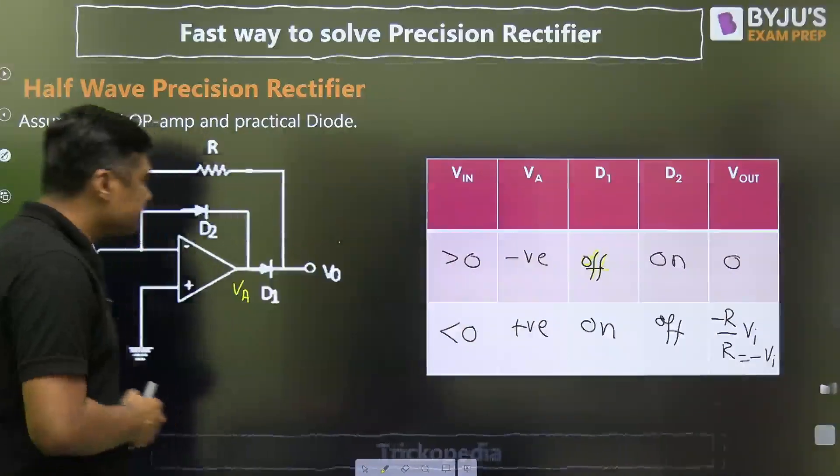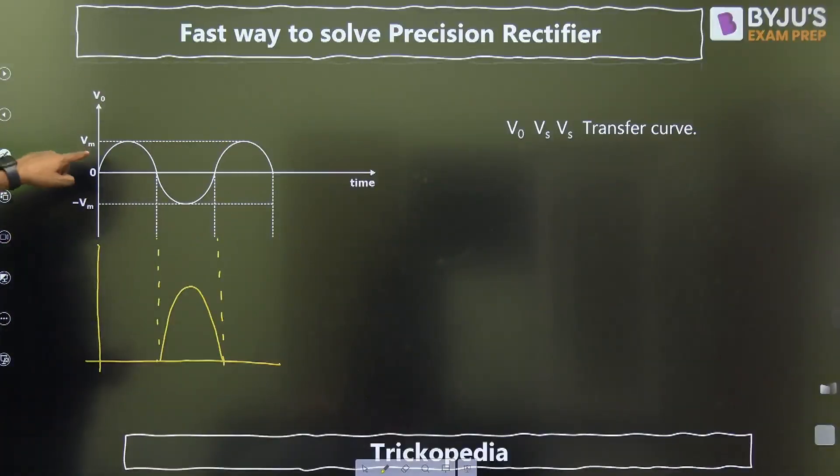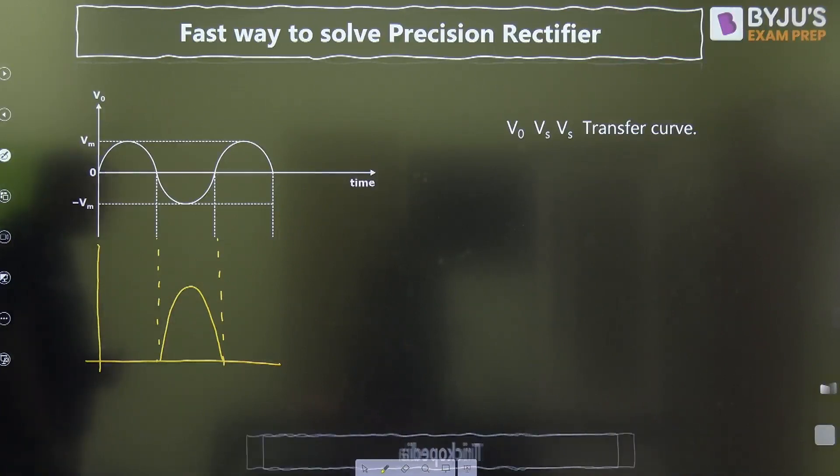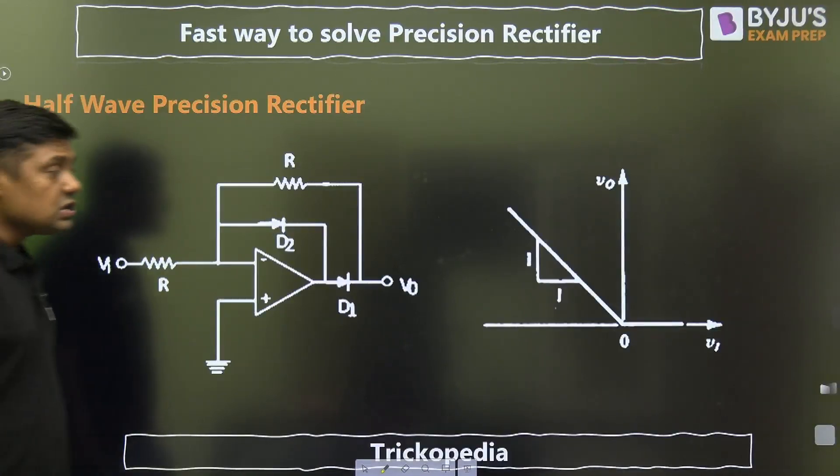Now, watch this diagram. This is the input. For positive half, output is 0. For negative half, we are getting the positive output. Again, for positive half, output is 0. This is a half-wave. What is the transfer curve?